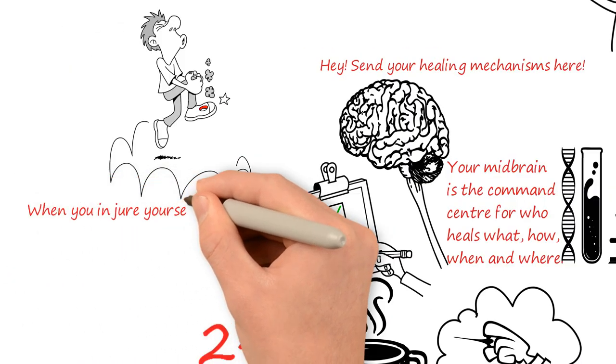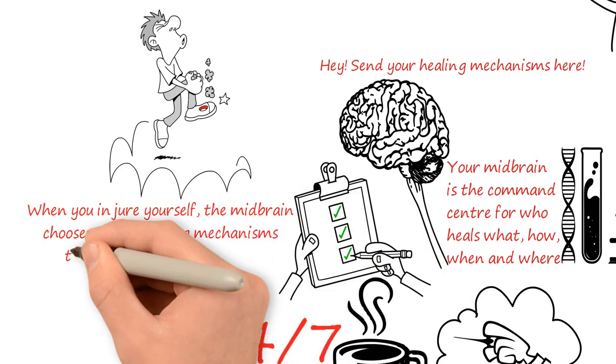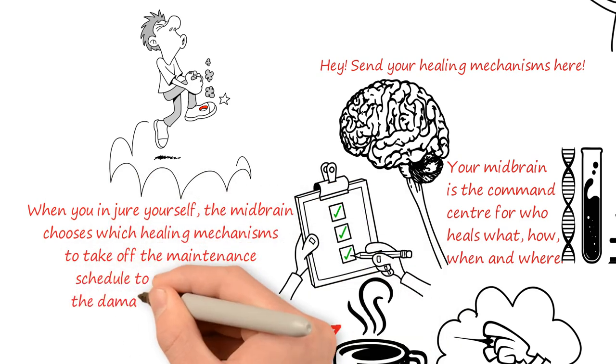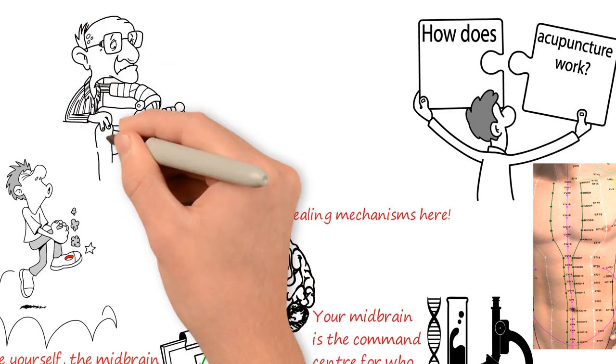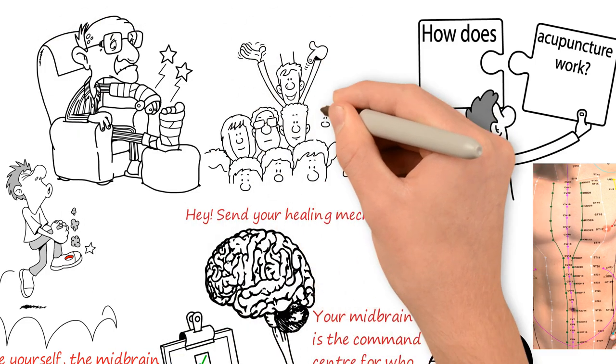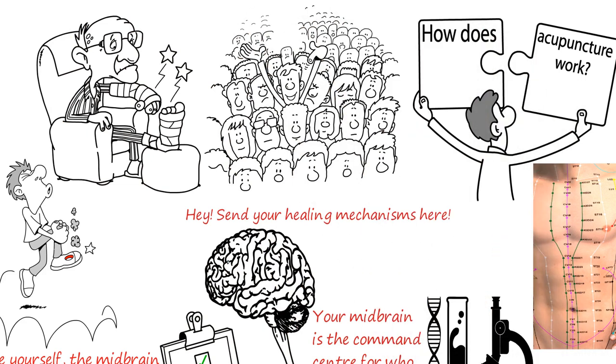When you injure yourself, the midbrain chooses which healing mechanisms to take off the maintenance schedule to go and repair the damage you have done. Let's say you sprain your ankle. Your body knows that you need your ankles to walk. It's a high priority. So it sends the troops down to sort out all the damaged tissue and get you back on your feet again.